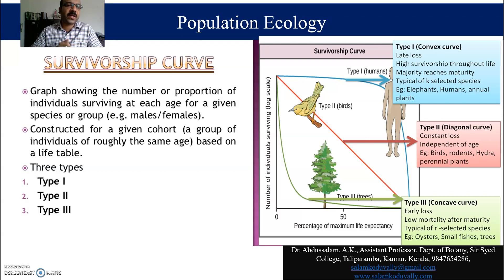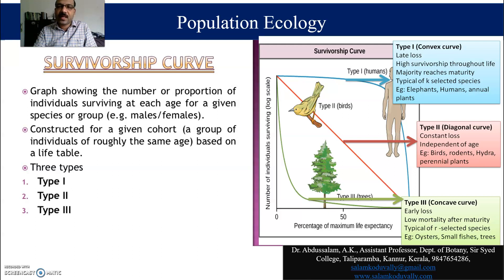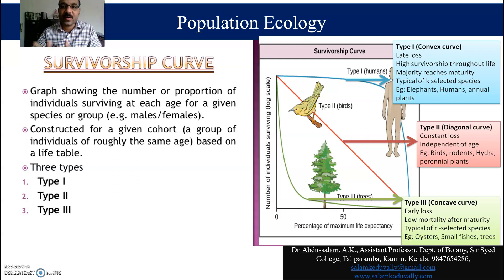Life table is very important. The three important groups are: Type 1, Type 2, and Type 3. Type 1 is concerned with human beings — it shows late loss, high survivorship throughout life, and majority reaches maturity. It is typical of K-selected species; examples include elephants, humans, and large animals. Type 2 is the diagonal curve, showing constant loss throughout life; examples include rodents, hydra, and perennial plants. Type 3 is the concave curve, showing early loss, low survivorship to maturity, typical of r-selected species; examples include oysters, small fishes, and trees.